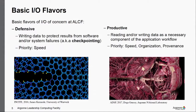Why are we doing IO? There are usually two flavors. There is defensive IO, also commonly known as checkpointing — you're trying to protect the data you're generating from system or software failures. Then there is productive IO, where the actual application really is visualization, and you need to read in all the data to do the analysis. On the left, a group is doing expensive electronic structure calculations at every step, so it makes sense to occasionally checkpoint so you don't have to start from scratch on failure.